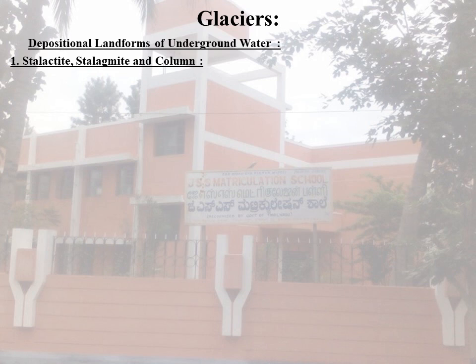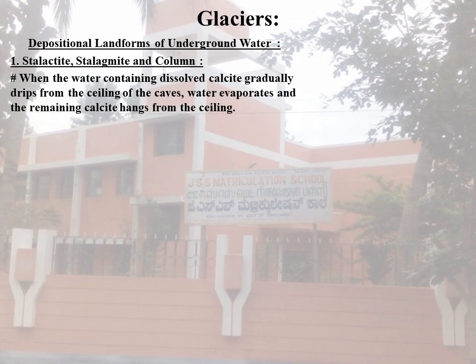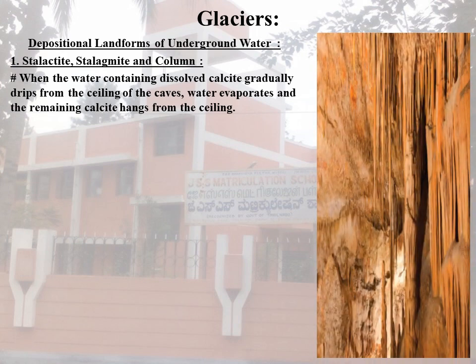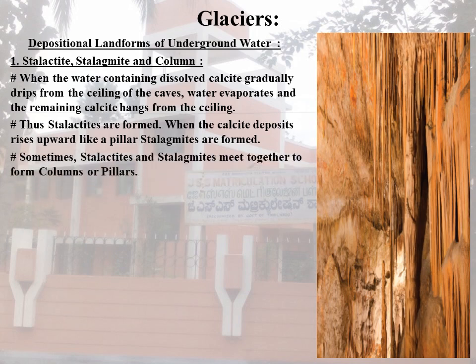When water containing dissolved calcite gradually drips from the ceiling of the caves, water evaporates and the remaining calcite hangs off the ceiling. Thus, stalactites are formed. When the calcite deposit rises upwards like a pillar from the floor, stalagmites are formed. Sometimes stalactites and stalagmites meet together to form columns or pillars, as shown in the pictures on the right side.